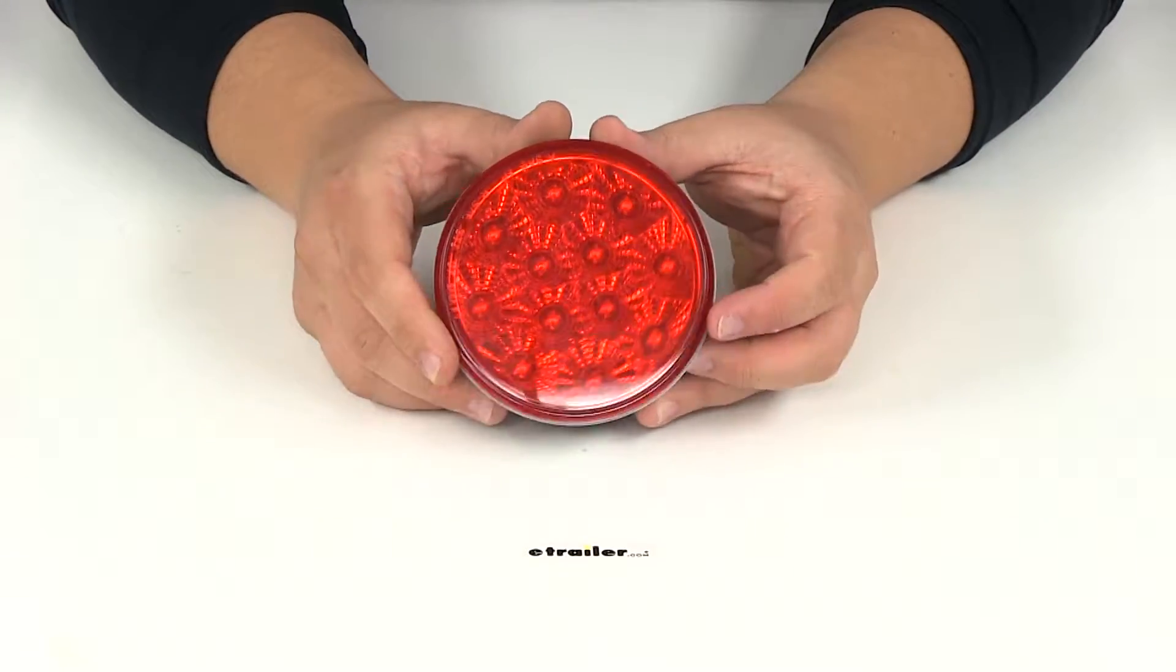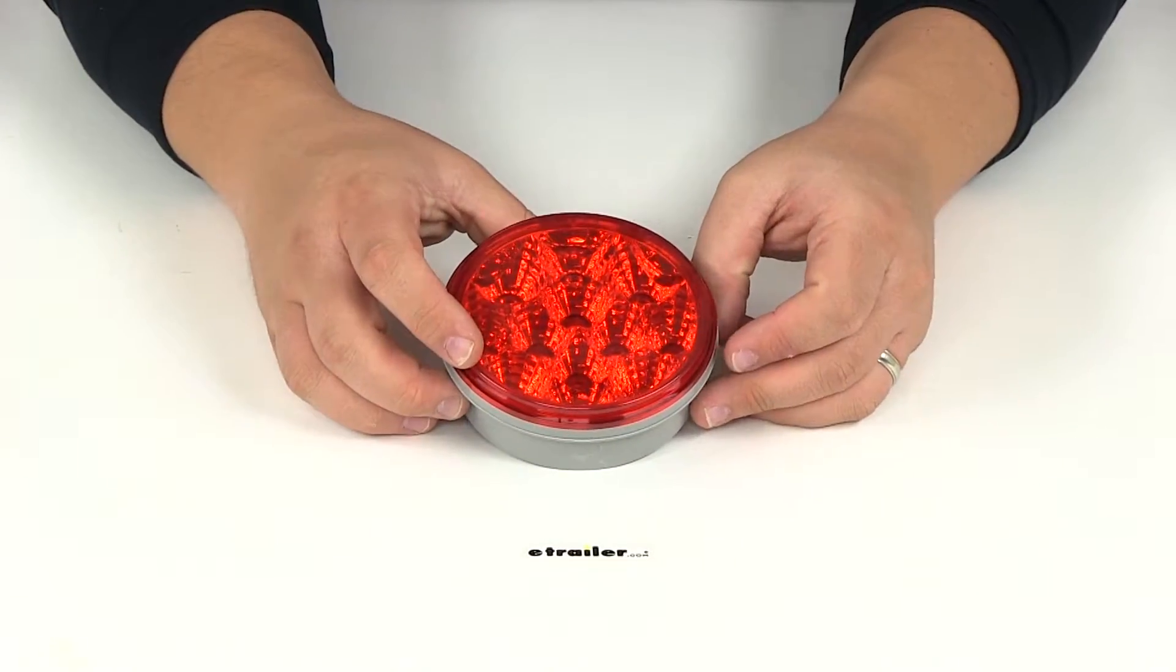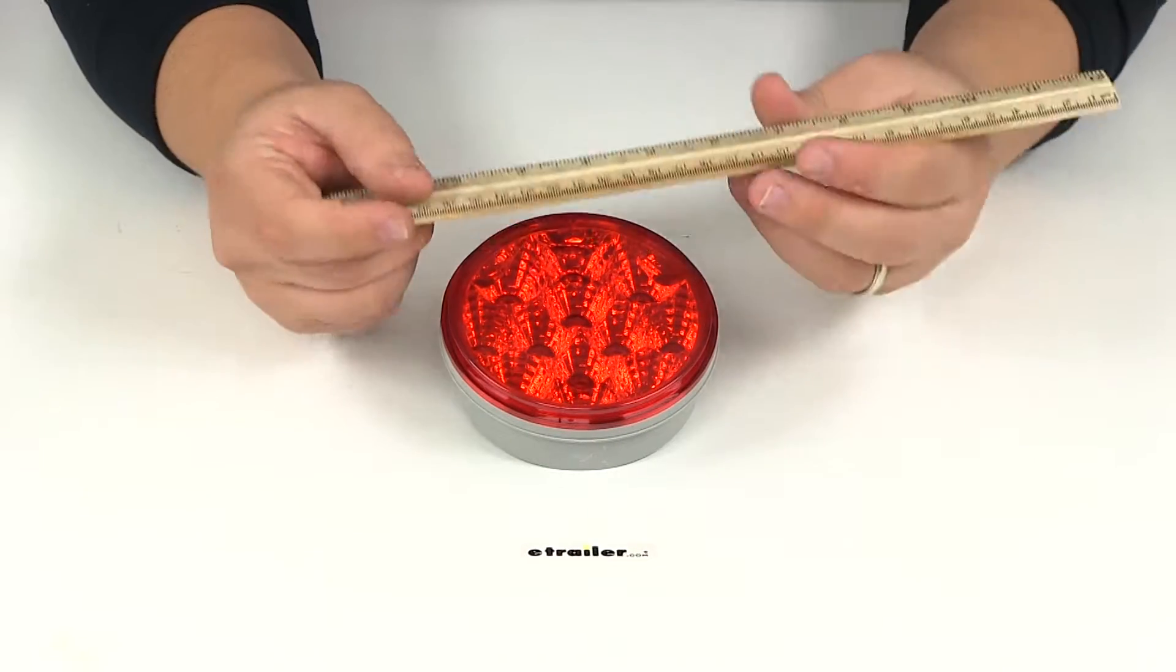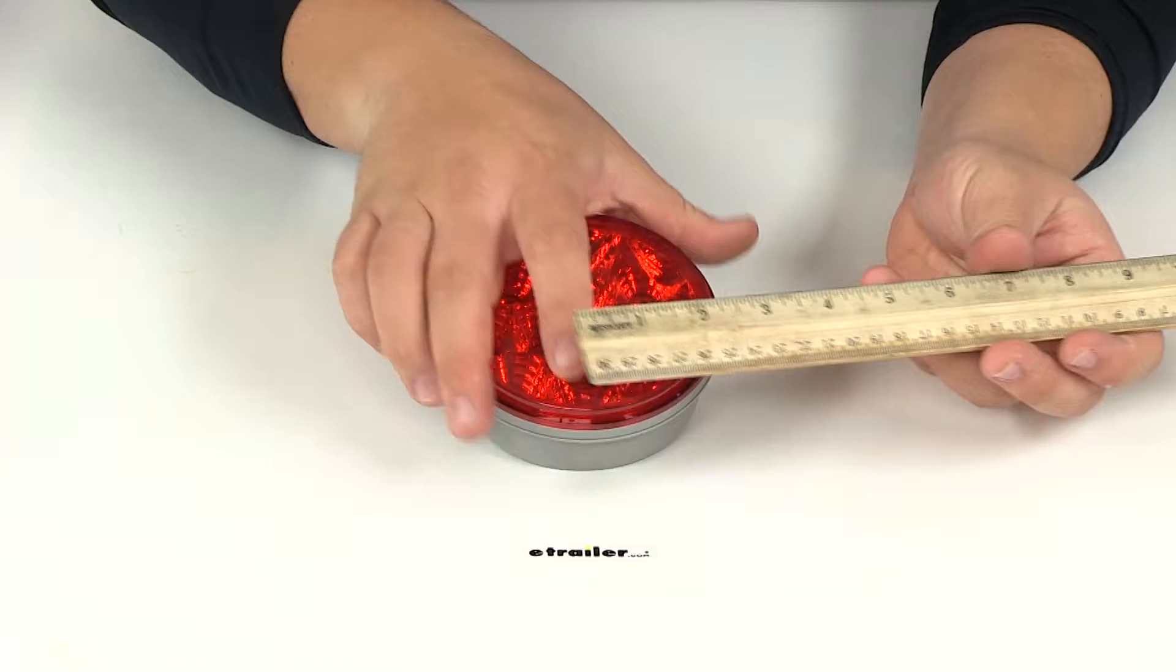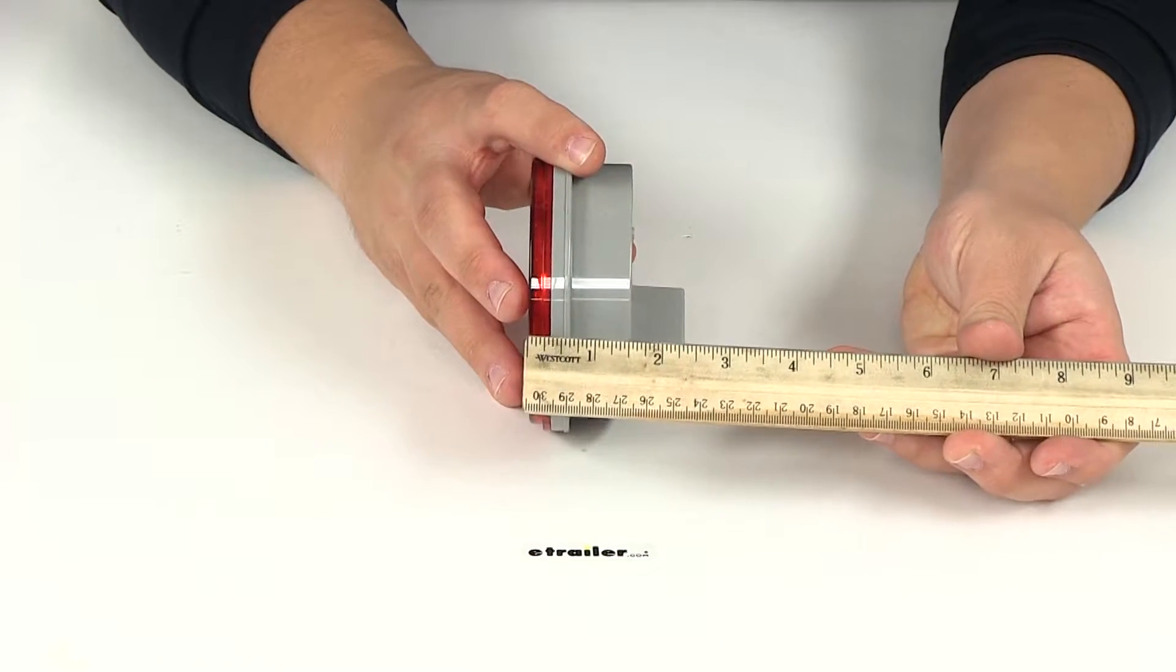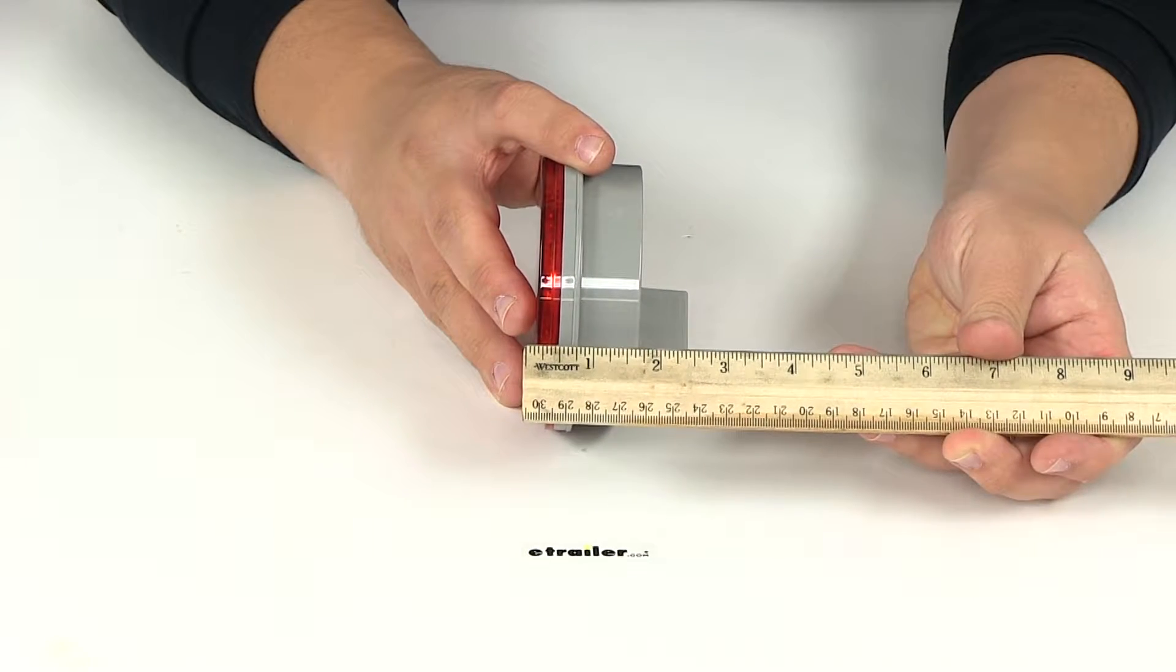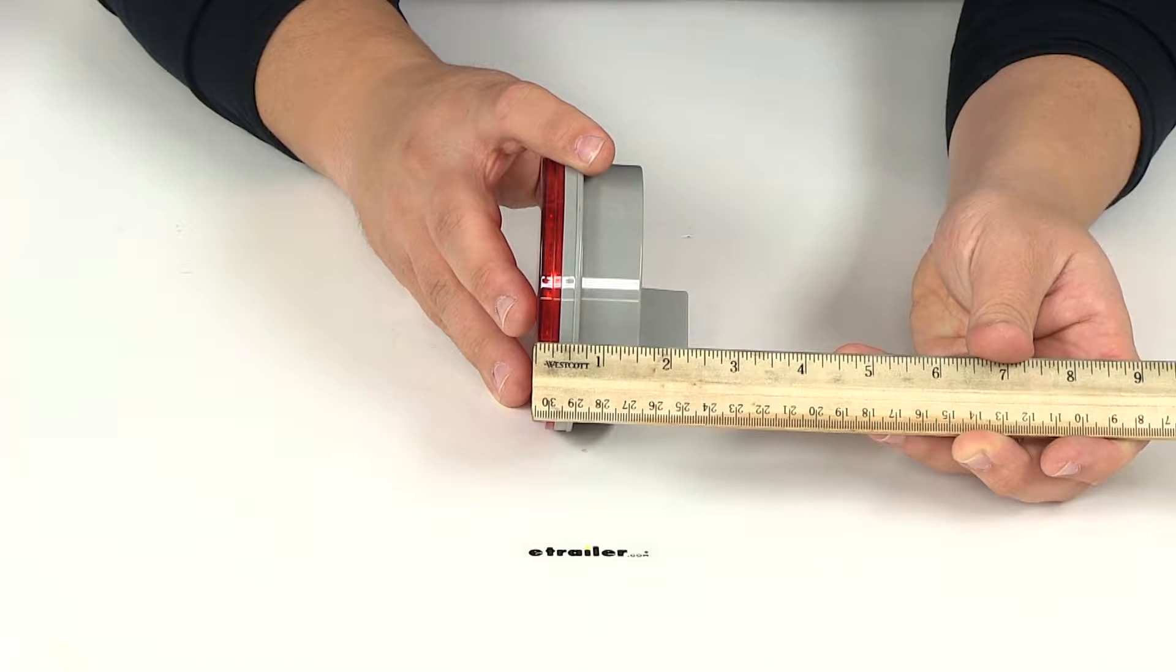It's a nice round light. The overall dimensions give us a diameter of about four and five-sixteenths of an inch with an overall depth of two and three-eighths of an inch.